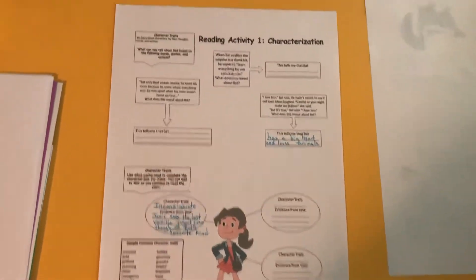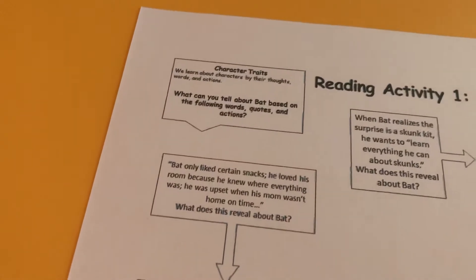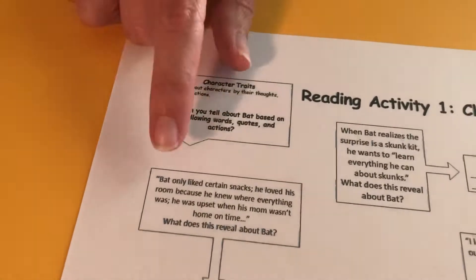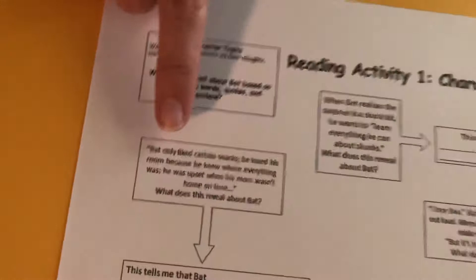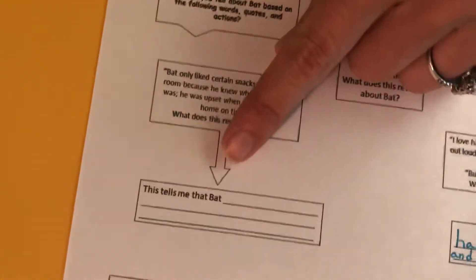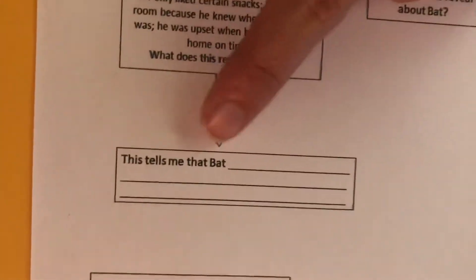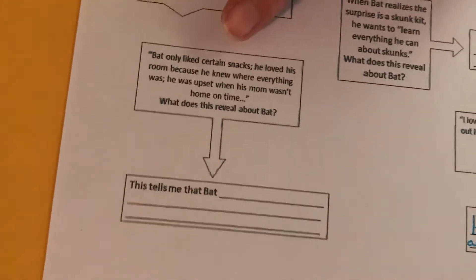So as a reminder, a character trait is what we learn about characters by their thoughts, their words, and their actions. We look at those things and try to figure out what we can learn about each character. So the first one says: Bat only likes certain snacks, he loved his room because he knew where everything was, he was upset when his mom wasn't home on time. What does this tell you about Bat? Your job is to write in the answer box. I'll give you a hint — think about what we know about Lester and Lester's character traits and see if you find anything similar, and let that be toward the front of your mind as you're learning about Bat.